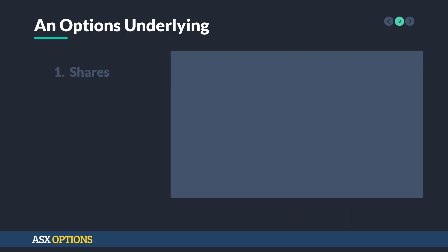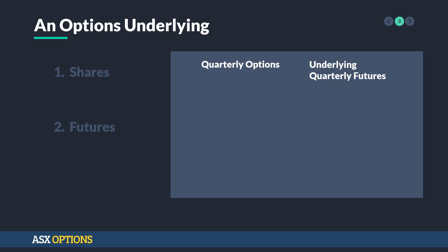Moving on, you can also have an option on futures contracts. So what would be the underlying in different examples? Let's talk about quarterly options on futures — the underlying are quarterly futures.